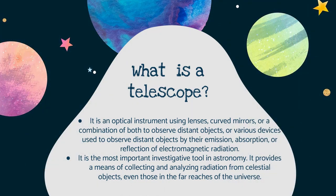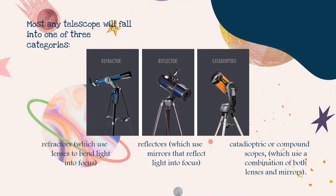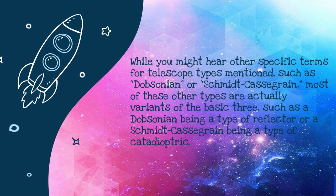A telescope is basically an optical instrument which uses lenses, curved mirrors, or a combination of both to observe distant bodies using their emission, absorption, and reflection of electromagnetic radiation. There are three types of telescopes: refractors, which use lenses; reflectors, which use mirrors; and catadioptrics or compound scopes, which use both lenses and mirrors. Specific terms like Dobsonian or Schmidt-Cassegrain are variants of these three basic types — the Dobsonian is a type of reflector, while the Schmidt-Cassegrain is a type of catadioptric.